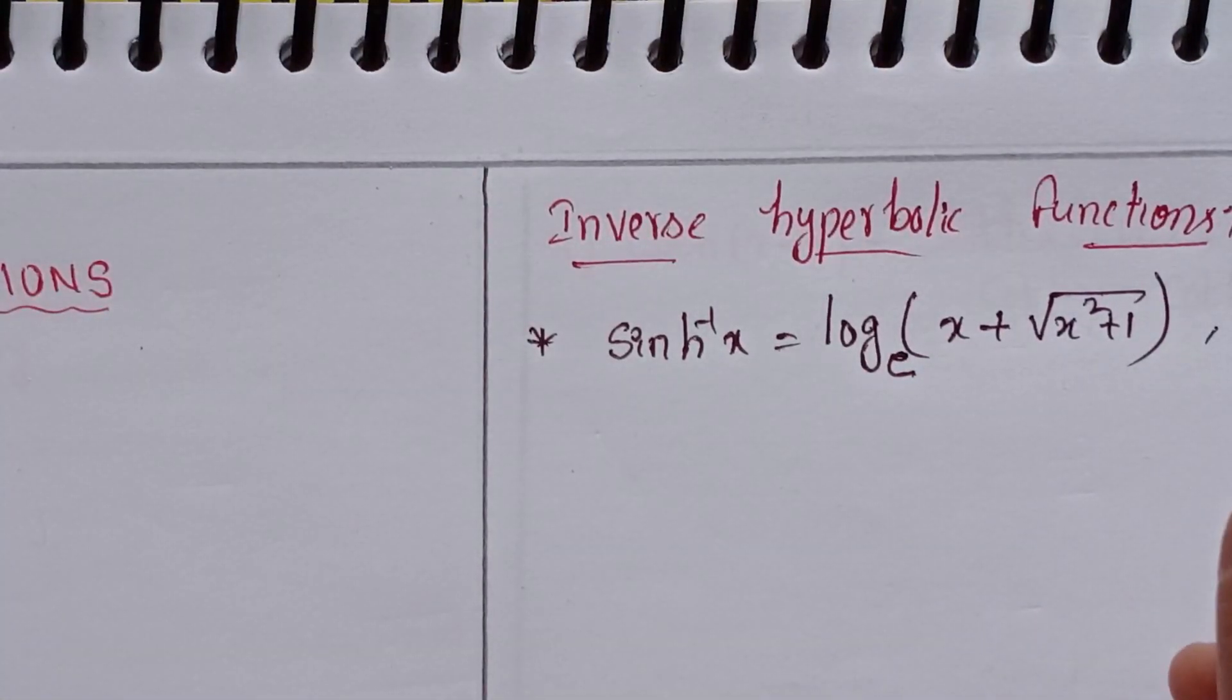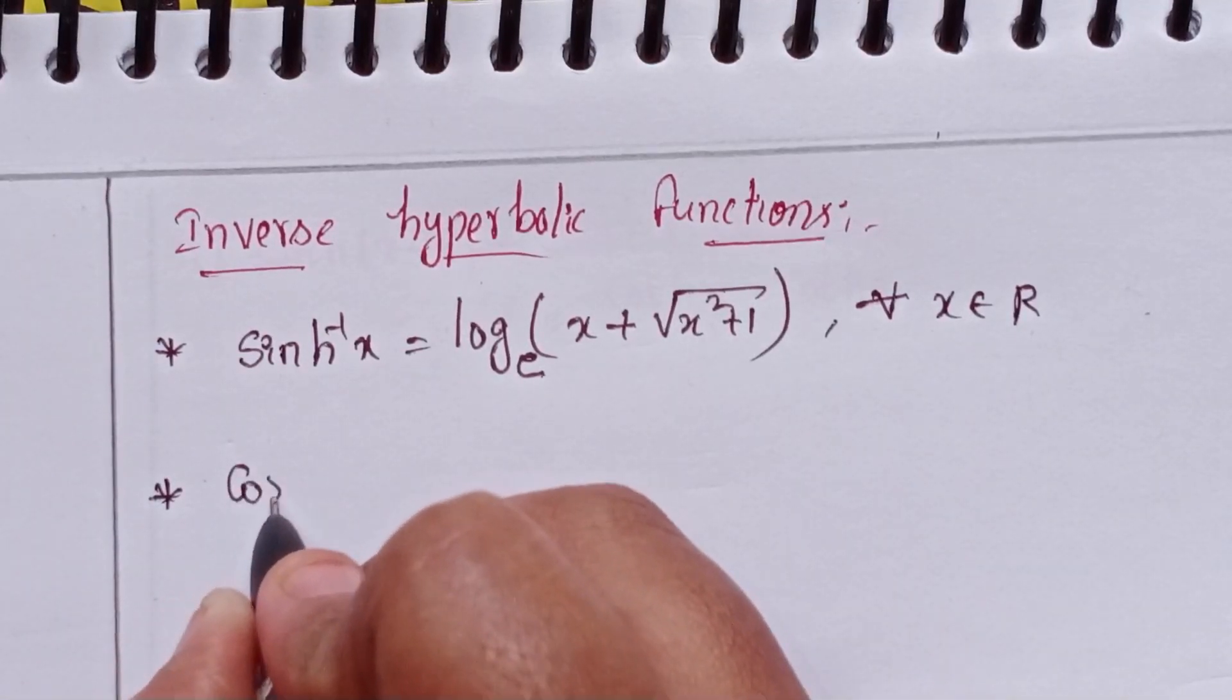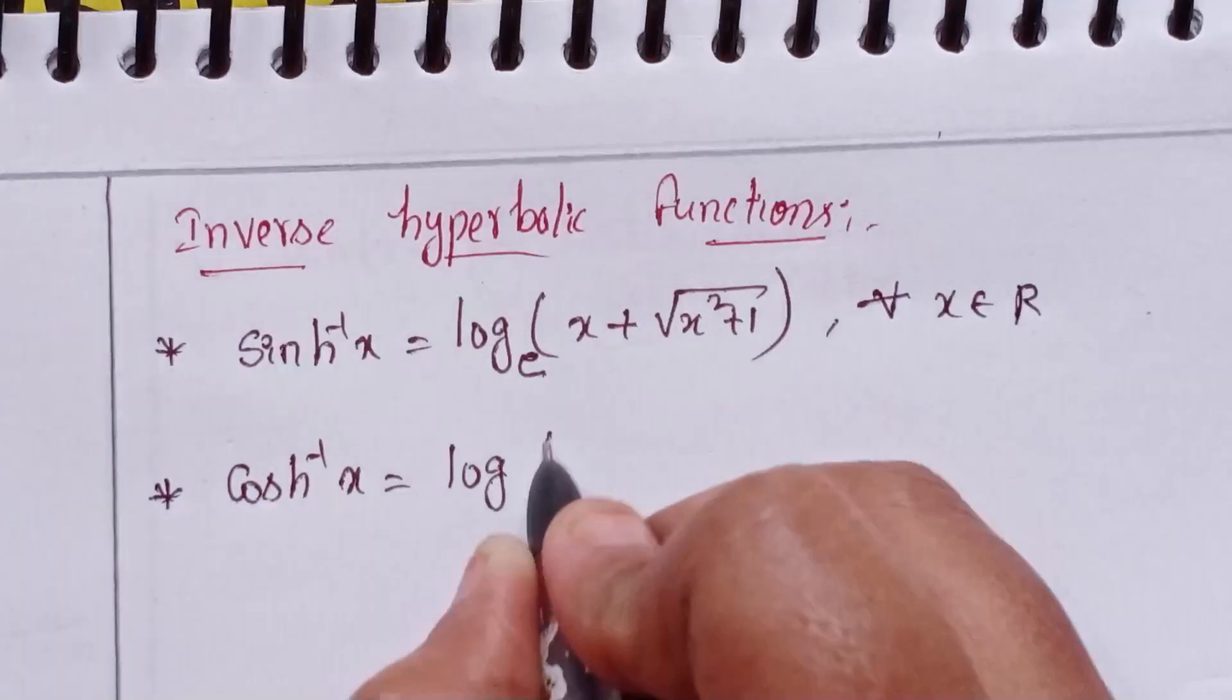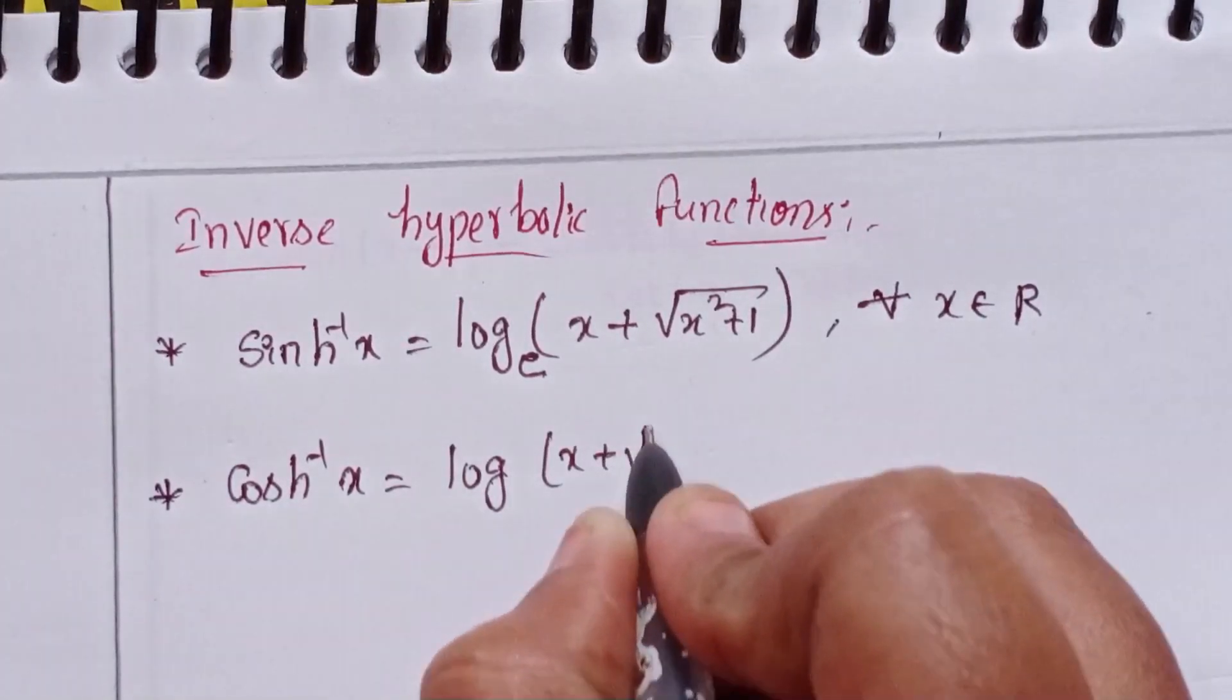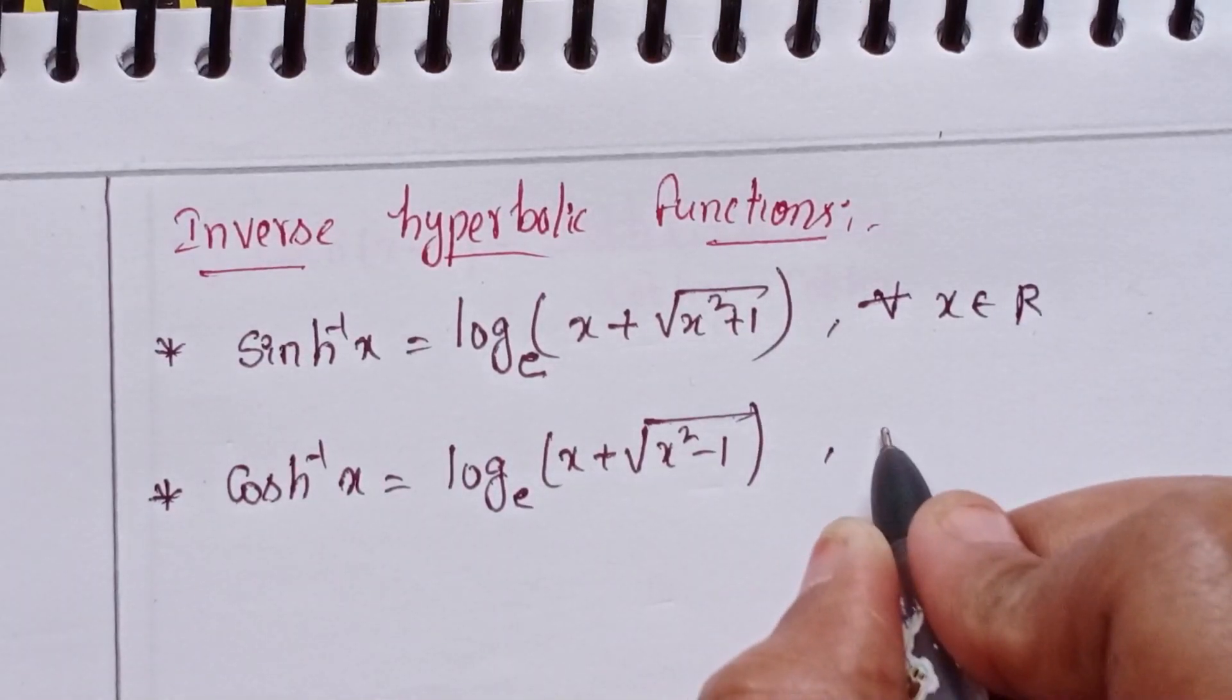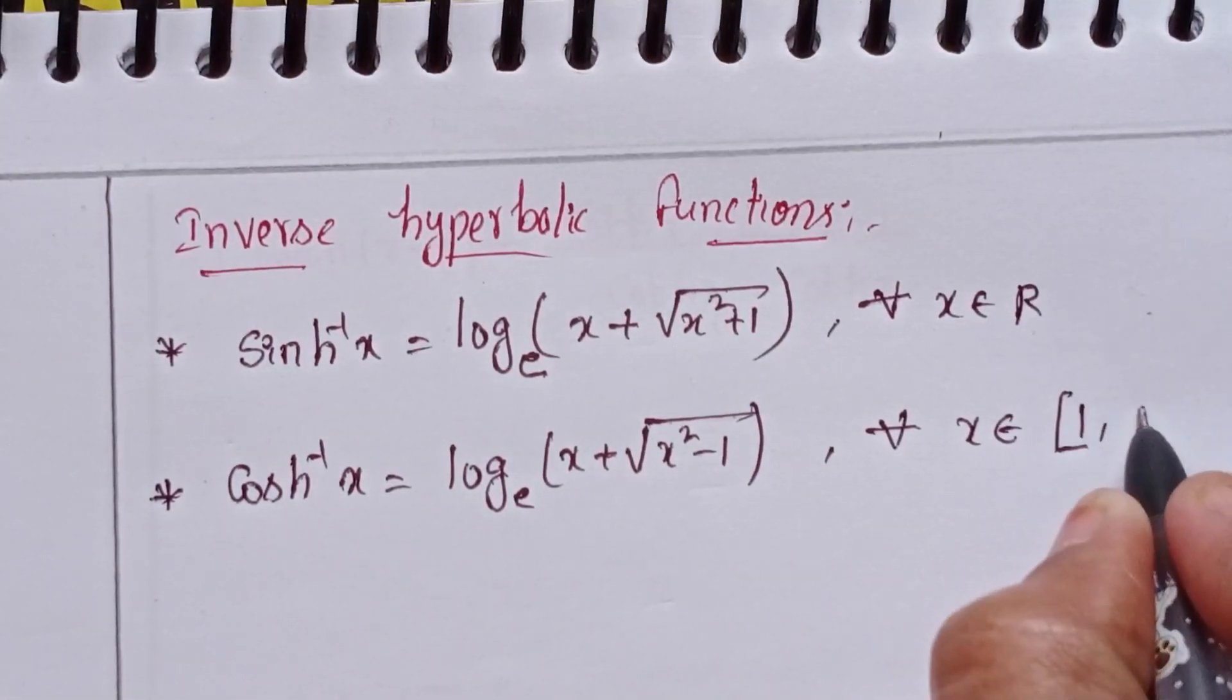Cosh inverse x equals log base e of x plus root x squared minus 1, for all x belongs to 1 to infinity.